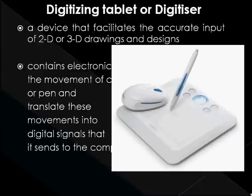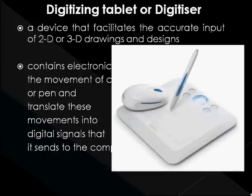For digitizing tablets, each point on the tablet represents a point on the display screen in a fixed manner. This differs from a mouse, in which all movement is relative to the current cursor position. The static nature of digitizing tablets makes them particularly effective for tracing complex drawings by designers, engineers, and architects.